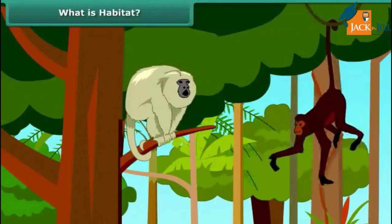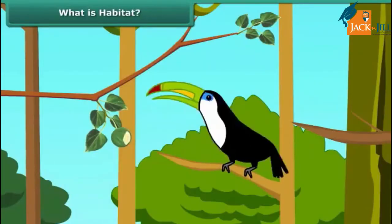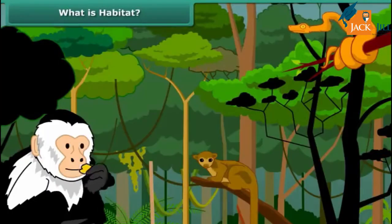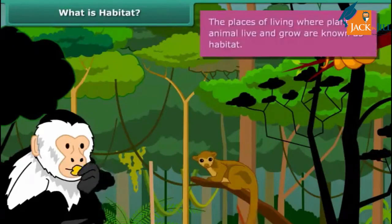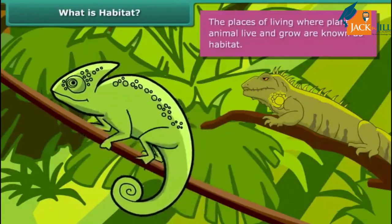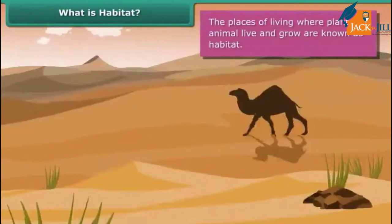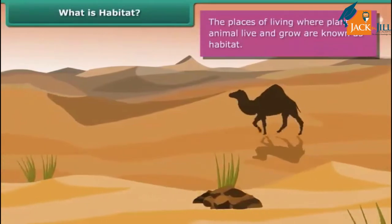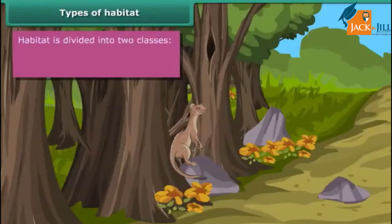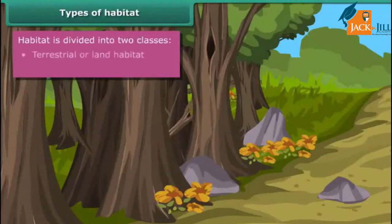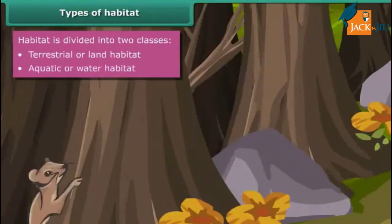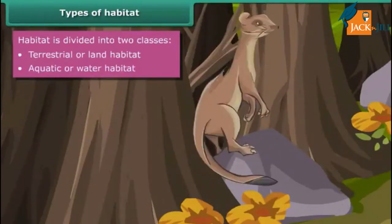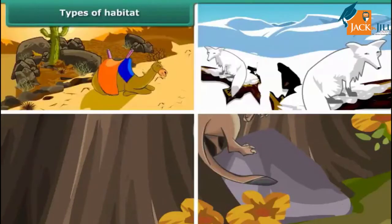Every organism requires some place where its basic necessities like food, water, and shelter are met. This place of living where plants and animals live and grow is known as habitat. All living organisms should adapt themselves to their habitat to thrive and survive. Habitat is divided into two classes: terrestrial or land habitat, and aquatic or water habitat. Desert, mountains, forest, and grasslands are examples of terrestrial habitat.